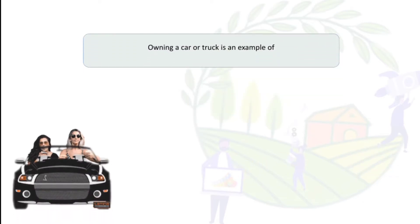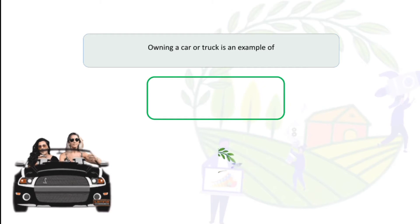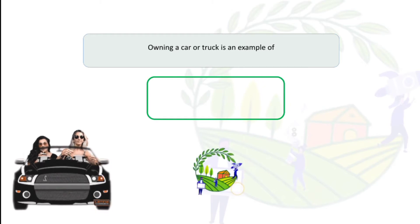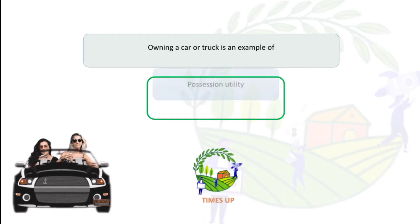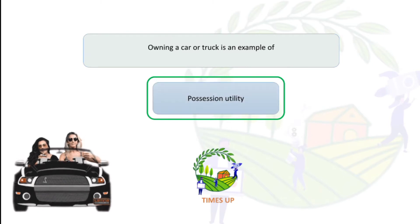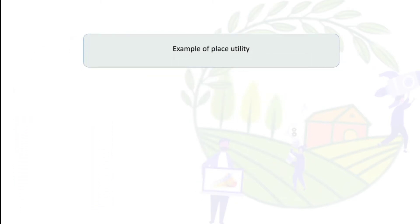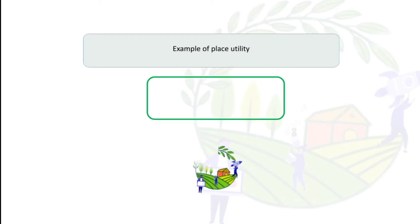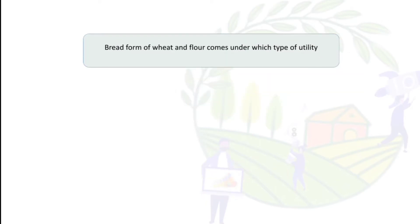Owning a car or truck is an example of position utility. A railroad or trucker is an example of place utility.